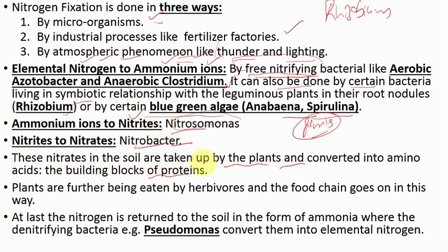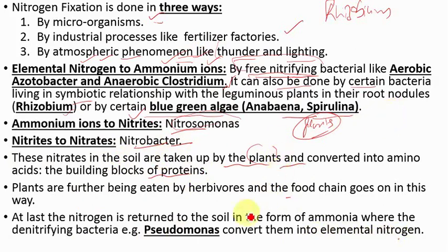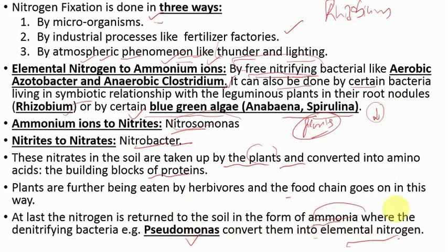Plants convert the fixed nitrogen — ammonium ions, nitrites, and nitrates — into amino acids, which are the basic building blocks of proteins. Plants are then eaten by herbivores and the food chain continues. When organisms die, their dead organic matter is decomposed by saprophytes, and the nitrogen is returned to the soil in the form of ammonia. Then denitrifying bacteria — for example, Pseudomonas — convert the nitrogen back into elemental nitrogen, which is released into the atmosphere. In this way the nitrogen cycle is completed.